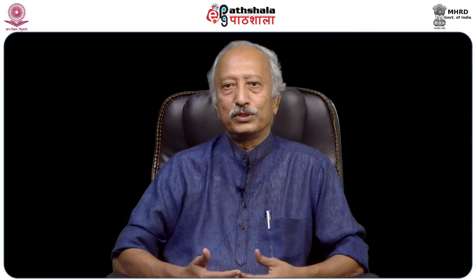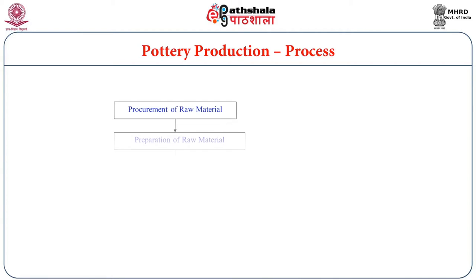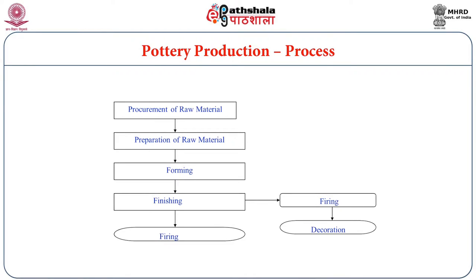The pottery production process involves a series of stages. First is procurement of raw material — identifying a place where clay of suitable grade is available. This is followed by preparation of the raw material. The clay procured from a formation is not ready for modifying into pottery; it contains impurities, coarse-grained rock pieces, and other unwanted material that interfere with developing a smooth, uniform paste. Removing this extraneous material has to be done before proceeding.